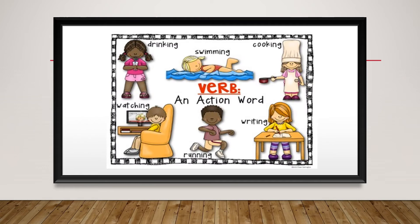Next one is verb. The sentence will be incomplete without the verb. A verb is an action word — a word from which we get what is happening. For example: drinking, swimming, cooking, watching, writing, running. A word which indicates an action — that is a verb.